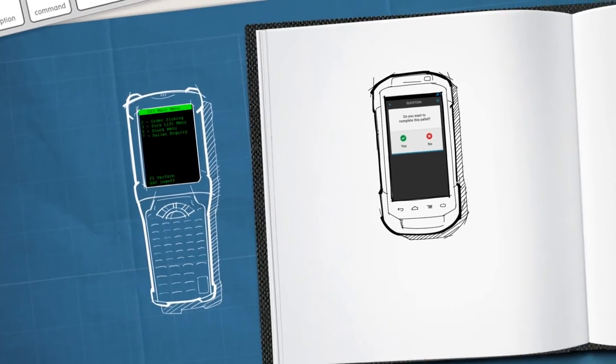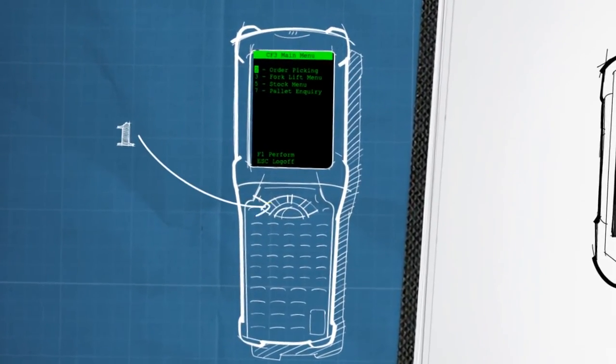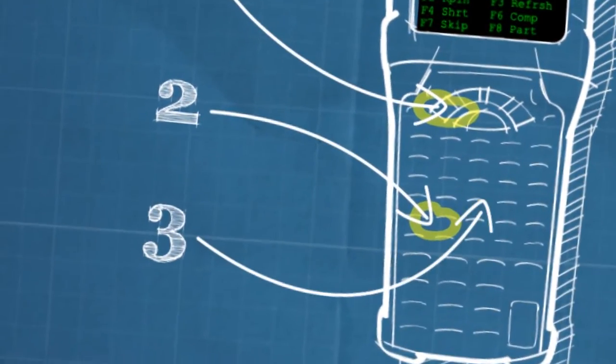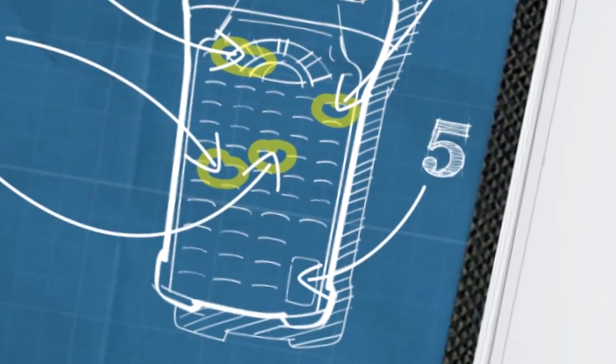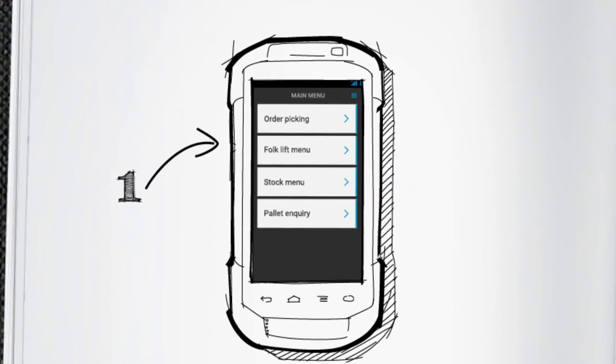I'm going to compare the two. If a worker wants to pick an item, in the old version it would have taken several clicks with their eyes moving all over the place. Now, it's just one simple tap.